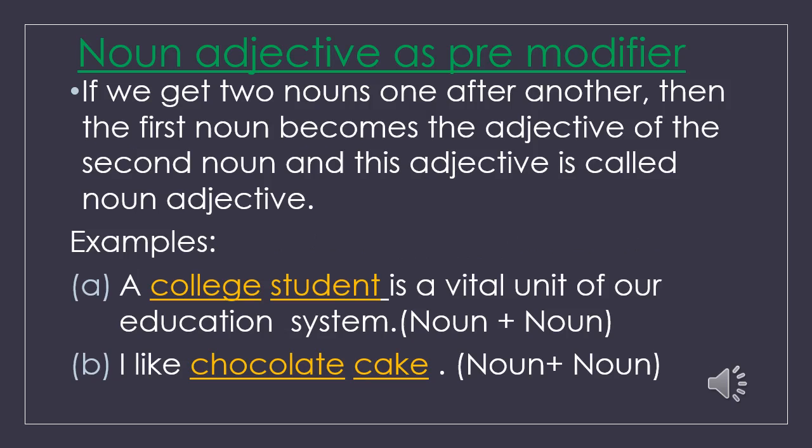Dear students, let's have a look at the next slide. Noun adjective as premodifier. If we get two nouns one after another, then the first noun becomes the adjective of the second noun, and this adjective is called noun adjective. Example A: 'A college student is a vital unit of our education system.' Example B: 'I like chocolate cake.' Here, the first noun 'college' is modifying the second noun 'student,' so it is a noun adjective used as premodifier. In the same way, 'chocolate' is modifying 'cake' and is used as premodifier.